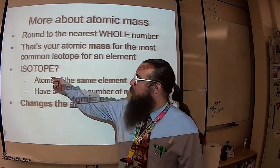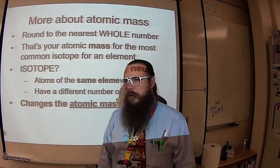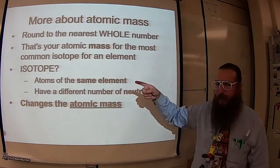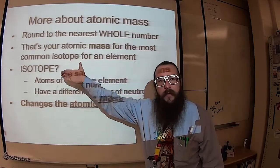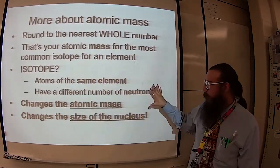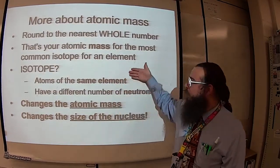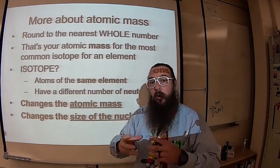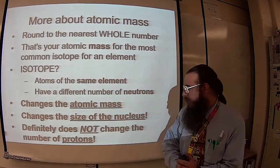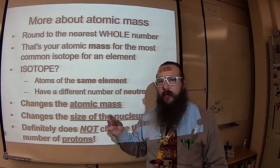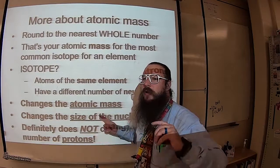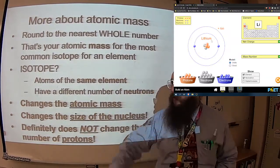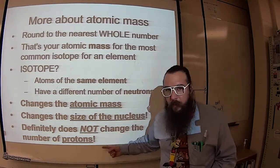Iso meaning same and tope meaning type. Same type, same type of atom, different mass. Because we're changing the mass by changing the number of neutrons, we're also changing the size of the nucleus, right? Because we're putting more or less things in the nucleus, so it's going to have a different size. Keep in mind though, as I've said already once, twice, now thrice, does not change the number of protons. If you change the number of protons, now you have a different element. We want to be the same element, so the same number of protons.